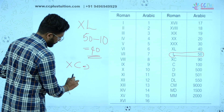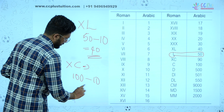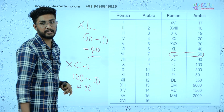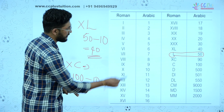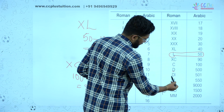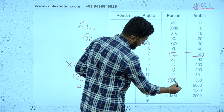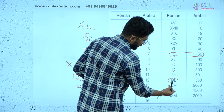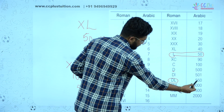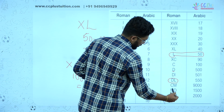90 is equal to XC. What do we say? 100 is equal to C. 10 is X. 90 is equal to 90 — 100 minus 10 is equal to 90, so 90 is XC. D is equal to 500. L is equal to 50. C is 100. M means 1000.